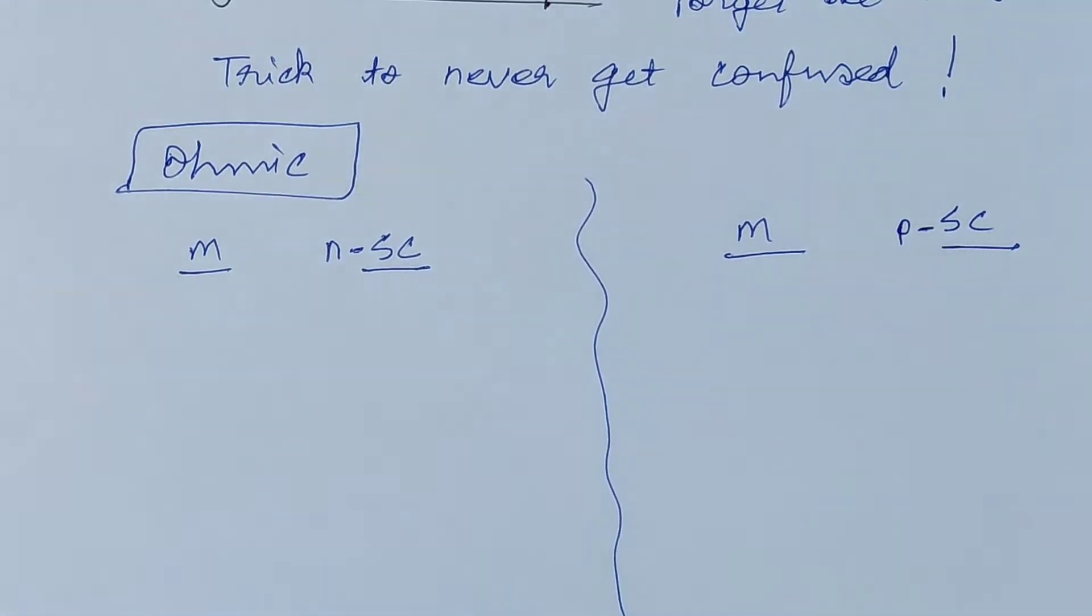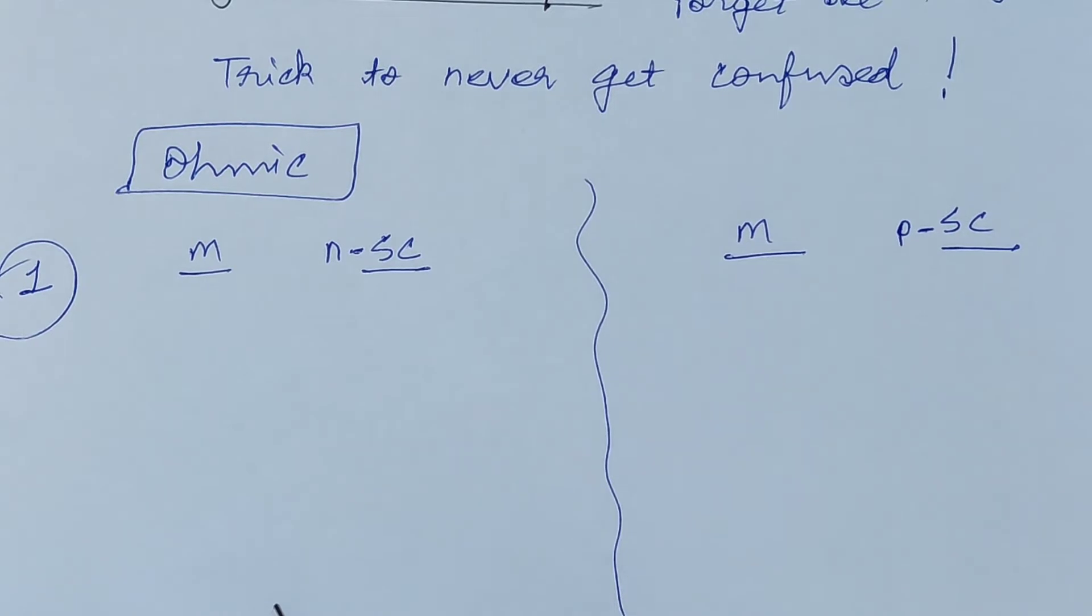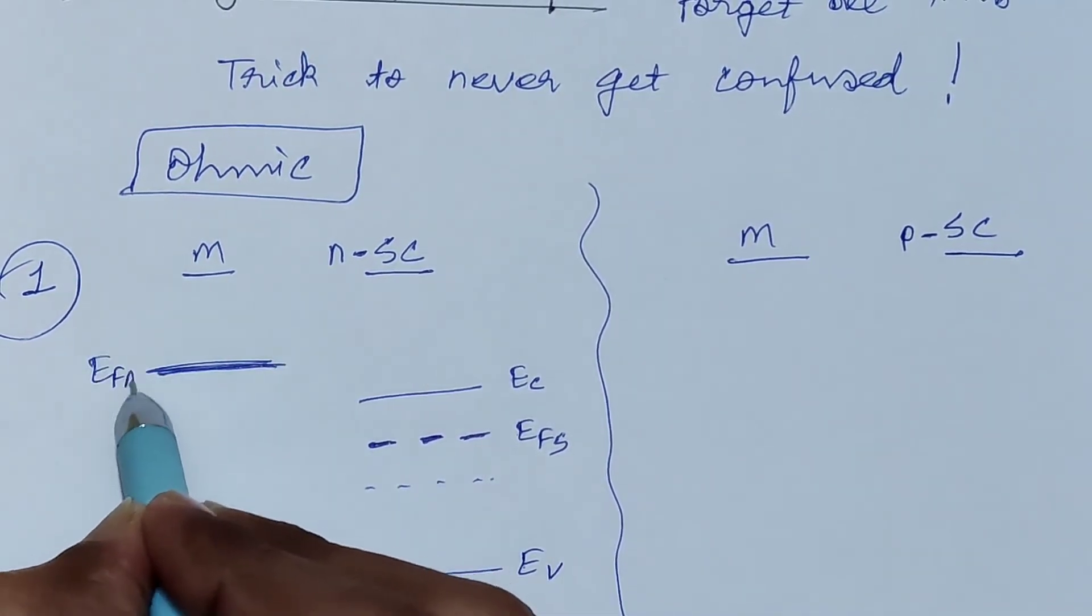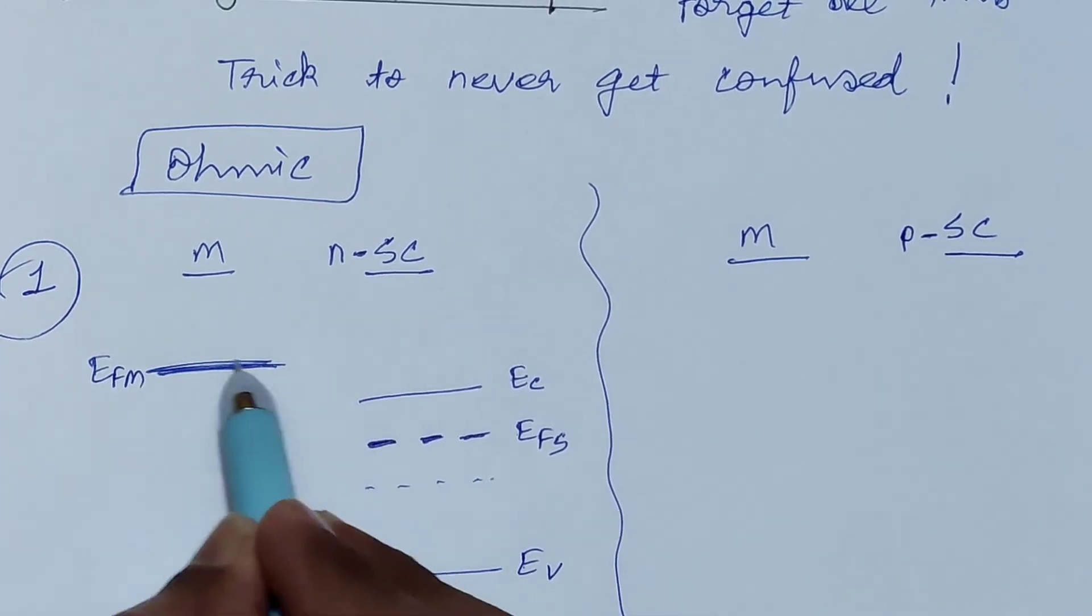For ohmic contact, here is the first case: metal and n-type semiconductor. Now we have the energy band diagram as shown here. EC is the conduction band, EB is the valence band, EFS is the Fermi level for the semiconductor, and EFM is the Fermi level for metal.